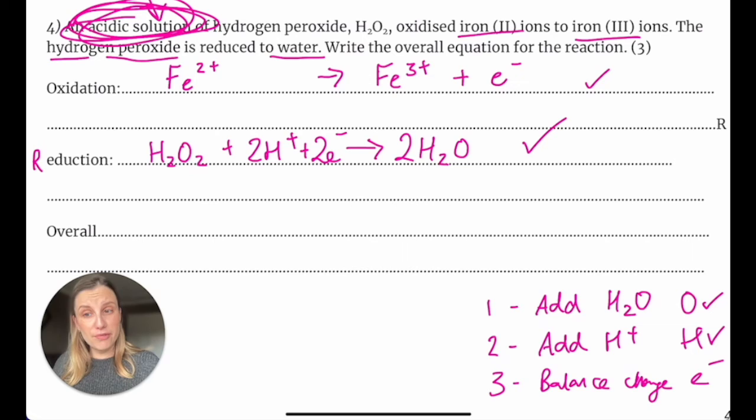So to make the overall equation, the key for an overall equation is that you've got no electrons in it. So whatever I do, I have to be able to cancel the electrons out, kind of like you would doing simultaneous equations in math.